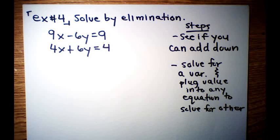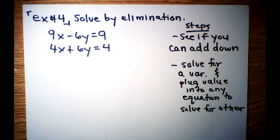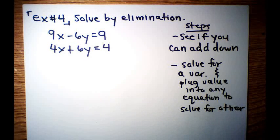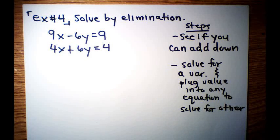First we did substitution, now we're going to do elimination. Elimination, just like the word says, we're going to eliminate one of the variables right away. So the first step for this, if you have a type of problem like this, is to see if you can add down. 9x minus 6y is equal to 9, and then 4x plus 6y is equal to 4. See if you can add down and eliminate a variable right away.